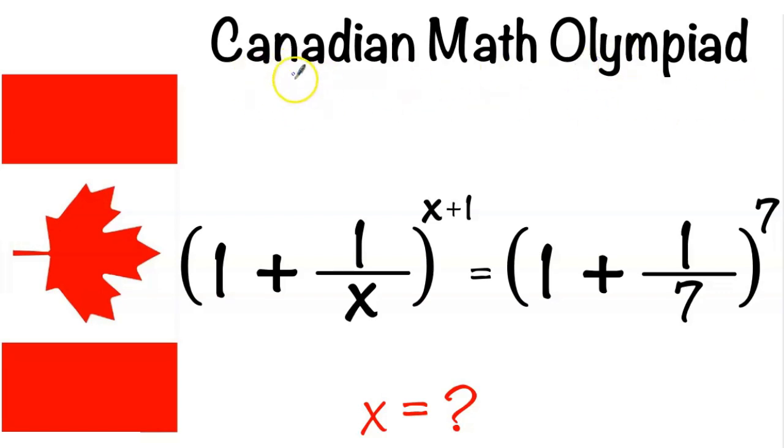Today I've got this Math Olympiad from Canada. Given the following equation: 1 plus 1 over x to power x plus 1, equal to 1 plus 1 over 7 to power 7. We need to find the value of x.